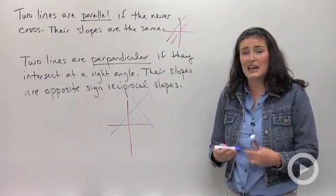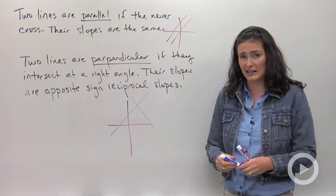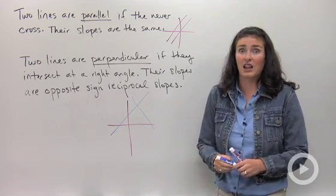Perpendicular lines mean they cross at a right angle, which is 90 degrees, and you're going to work with that a lot in geometry.